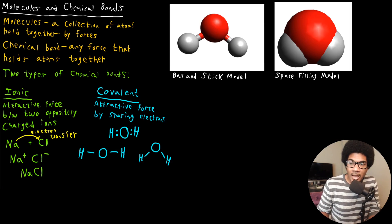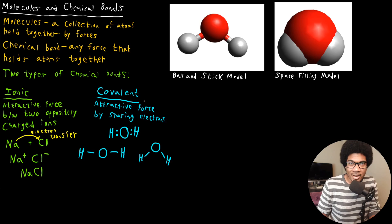These two types of bonding — ionic and covalent — are really the two extremes of bonding. Most bonds are somewhere between the two, where they have some sort of charge-like character. That's something we'll talk about in more detail later in the course.